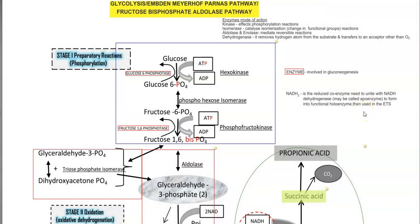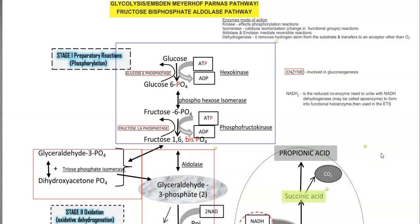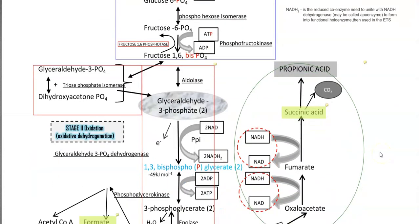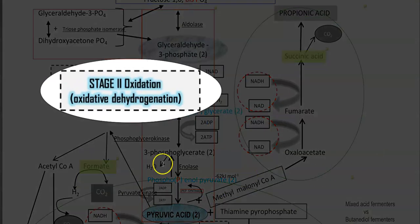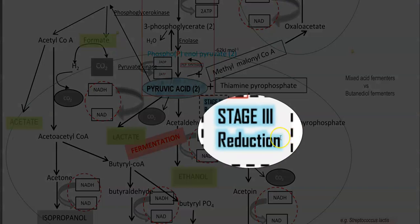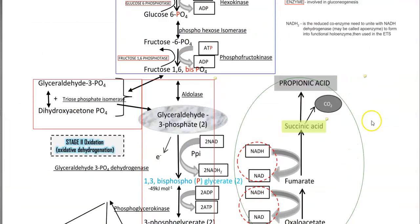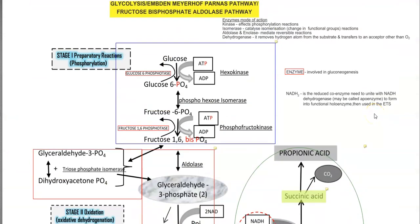The total glycolysis process can be divided into three parts. The first is Stage 1, which refers to the preparatory reaction — mainly how the sugar is phosphorylated inside the system. The second step is mainly related to the oxidative dehydrogenation of the molecules. Finally, Stage 3 is the reduction stage, which involves the main process of fermentation, mainly to ensure the recycling of NAD. Before going into detail, we need to understand certain basics — under what conditions it happens.